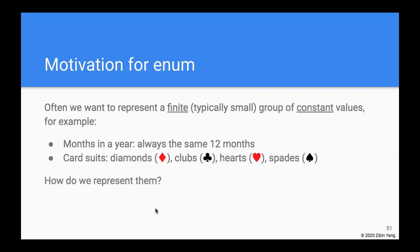For example, we might want to represent the months in a year, which are always the same 12 months, or the card suits, which are always four of them: diamond, clubs, hearts, and spades.